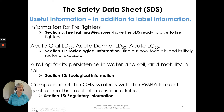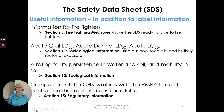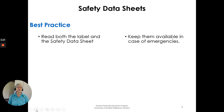Rating for persistence in water and soil, and mobility in soil, is found in Section 12, Ecological Information. A comparison of the Globally Harmonized System symbols with the PMRA hazard symbols that appear on the front of a label will be explained in Section 15, Regulatory Information. As a best practice, read both the label and the Safety Data Sheet, and keep them available in case of emergencies.